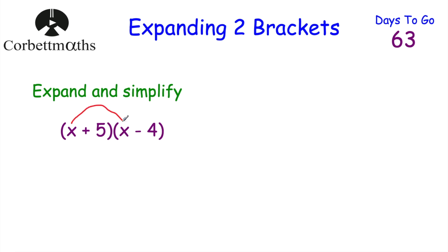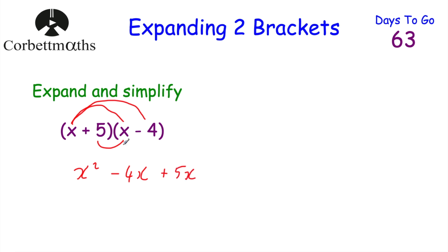So x times x is x squared, and x multiplied by minus 4 is minus 4x. Then 5 multiplied by x is plus 5x, and finally 5 multiplied by minus 4: positive times a negative is a negative, and 5 times 4 is 20, so that's minus 20.